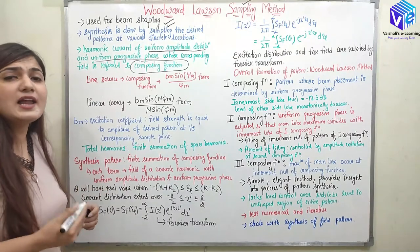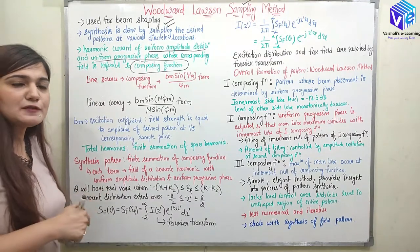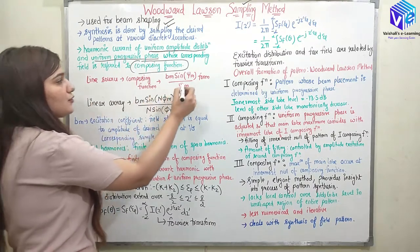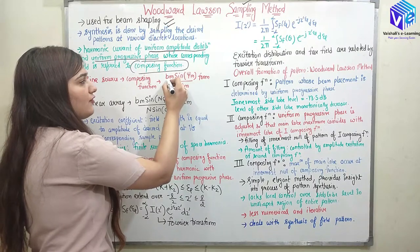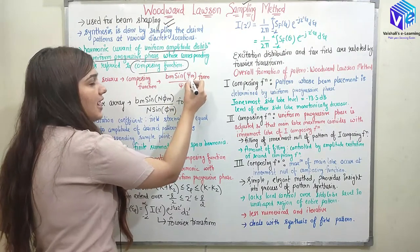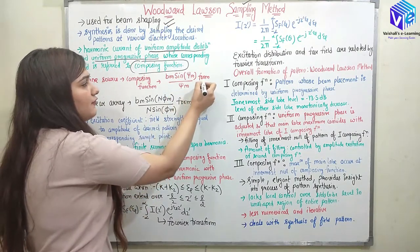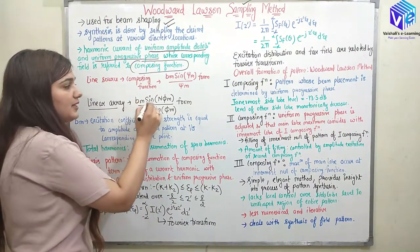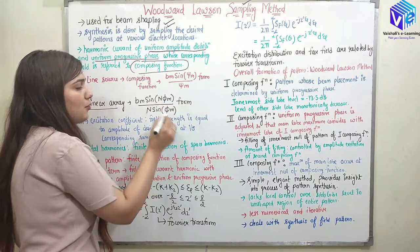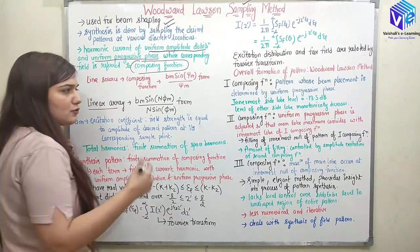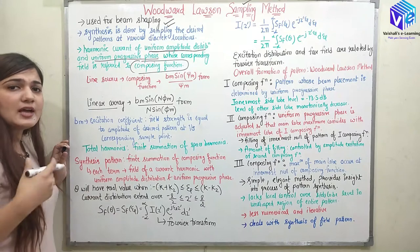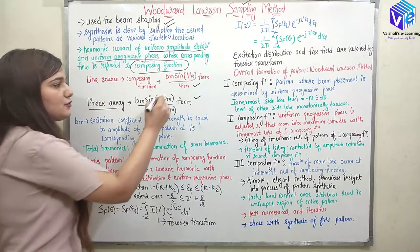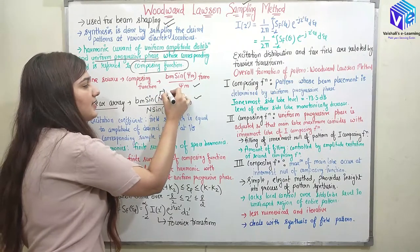When we have a line source and an array, both have different composing functions. The line source has a composing function of the form bm · sin(ψm) / ψm. For a linear array, the composing function is bm · sin(N·φm) / (N·φm), where N denotes the number of elements in the array.